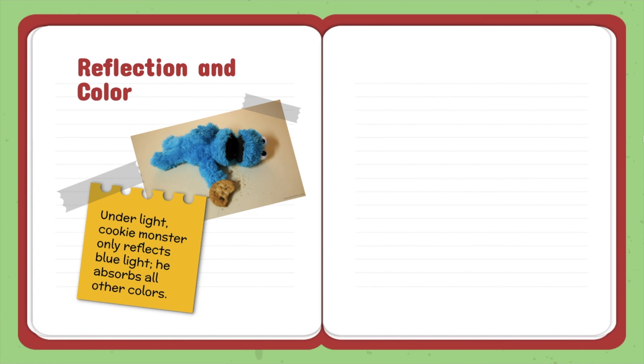Reflection and color. Under light, Cookie Monster only reflects blue light. He absorbs all other colors. That's why he looks blue.